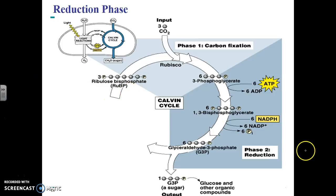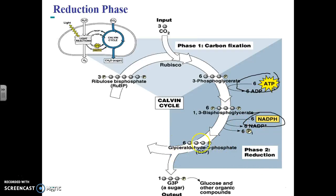We're now going to take a look at the reduction phase of the Calvin cycle. In the reduction phase, the energy from ATP, along with the electrons and hydrogens from NADPH — which were made in the light reactions — are used to reduce these molecules. At the end of the reduction phase, we have six molecules of G3P. G3P is half a glucose molecule. So at the end of the reduction phase, using ATP and NADPH from the light reactions, we add hydrogens and electrons to produce six molecules of G3P, which is half a glucose molecule.